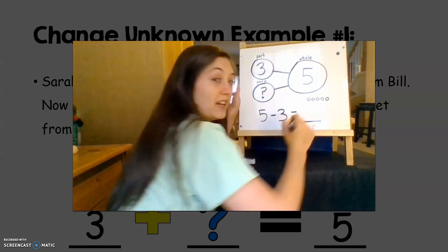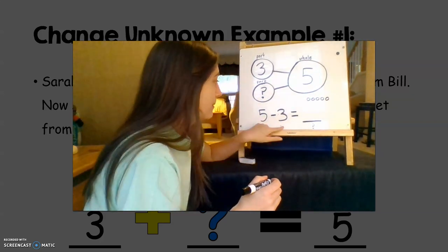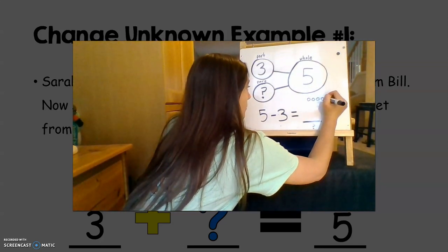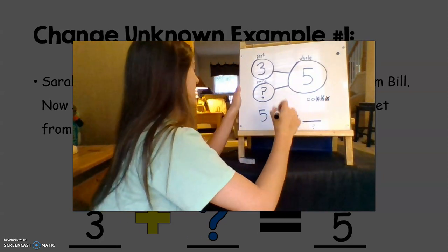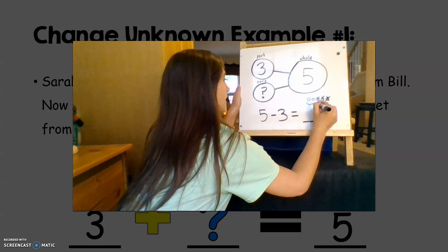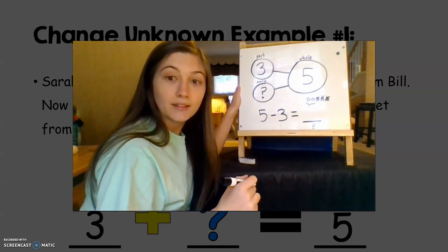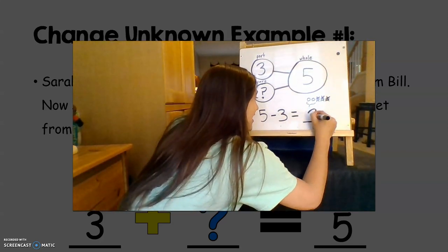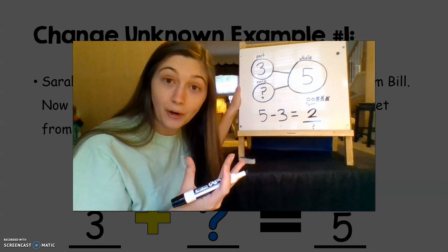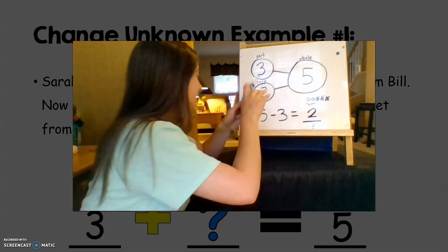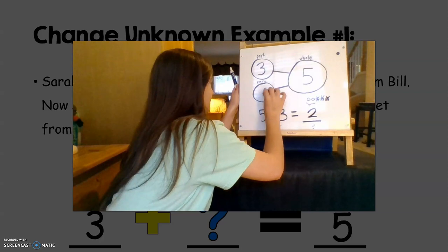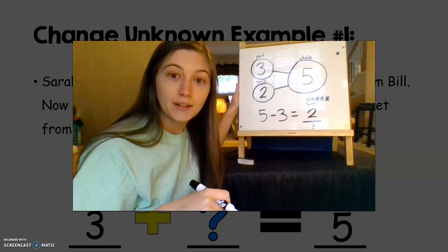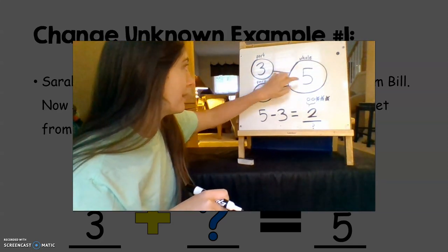I drew five circles. How many am I taking away? Three. So I'm going to X out three of them — one, two, three. Now I want to know how many circles are left over after I took away three. That's right — two. Did we find our missing part? Yes, we did. So I'm going to erase our question mark. Our missing part is two. Three and two make our whole of five.